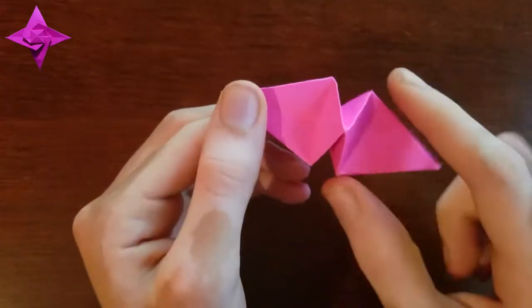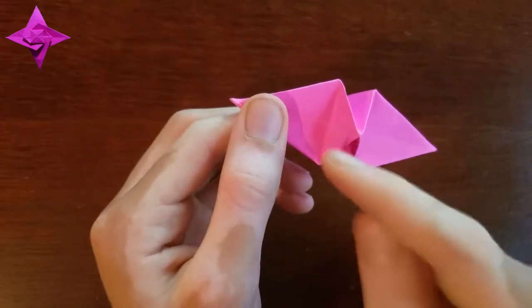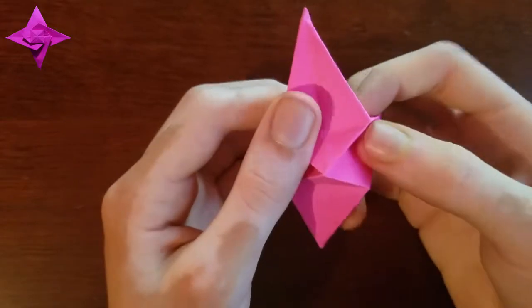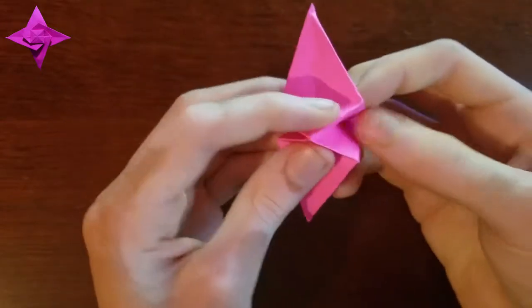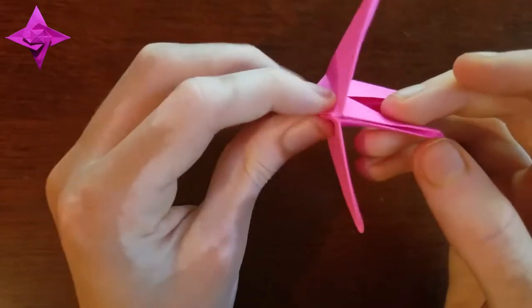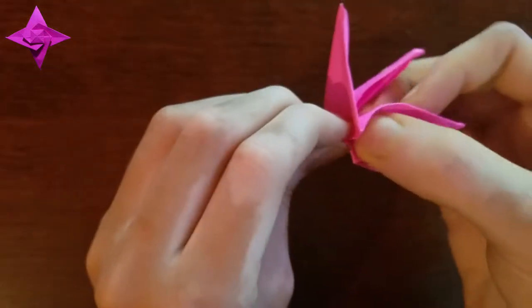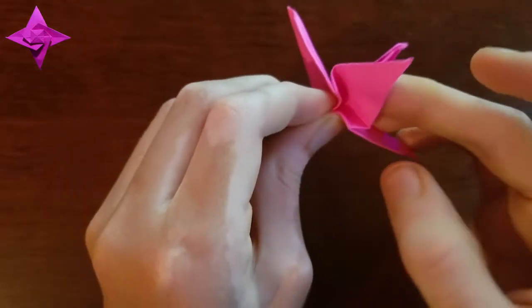And it's called the bird base twist star because you're twisting here. So you kind of open it up here, you can hold this together, spread these layers like this.